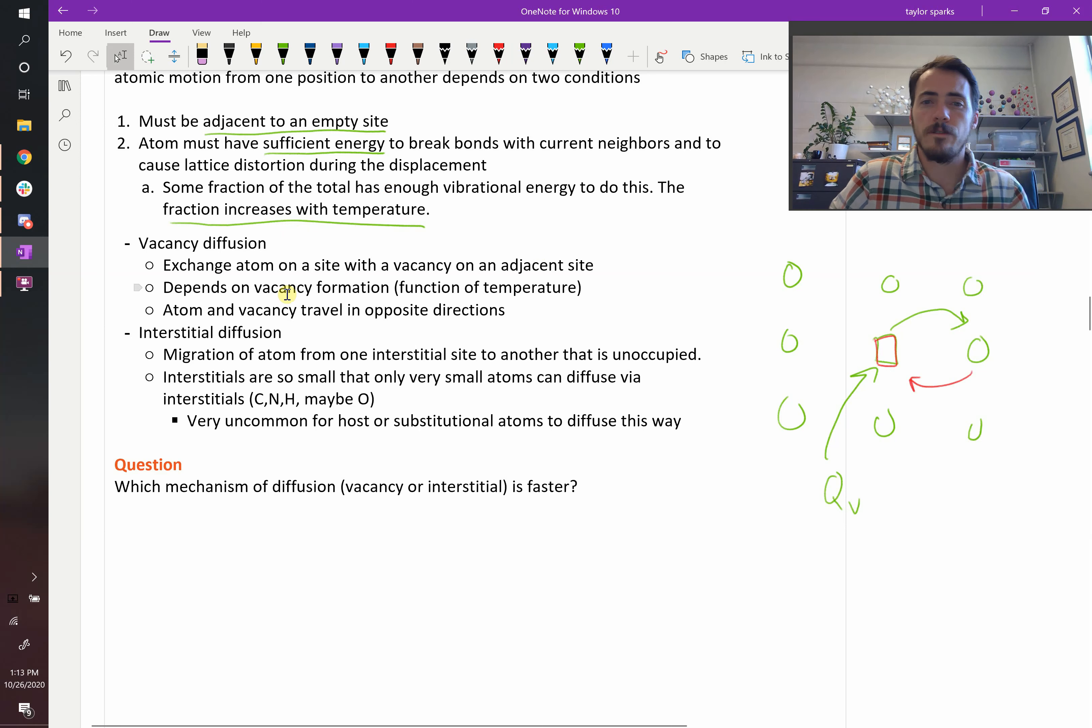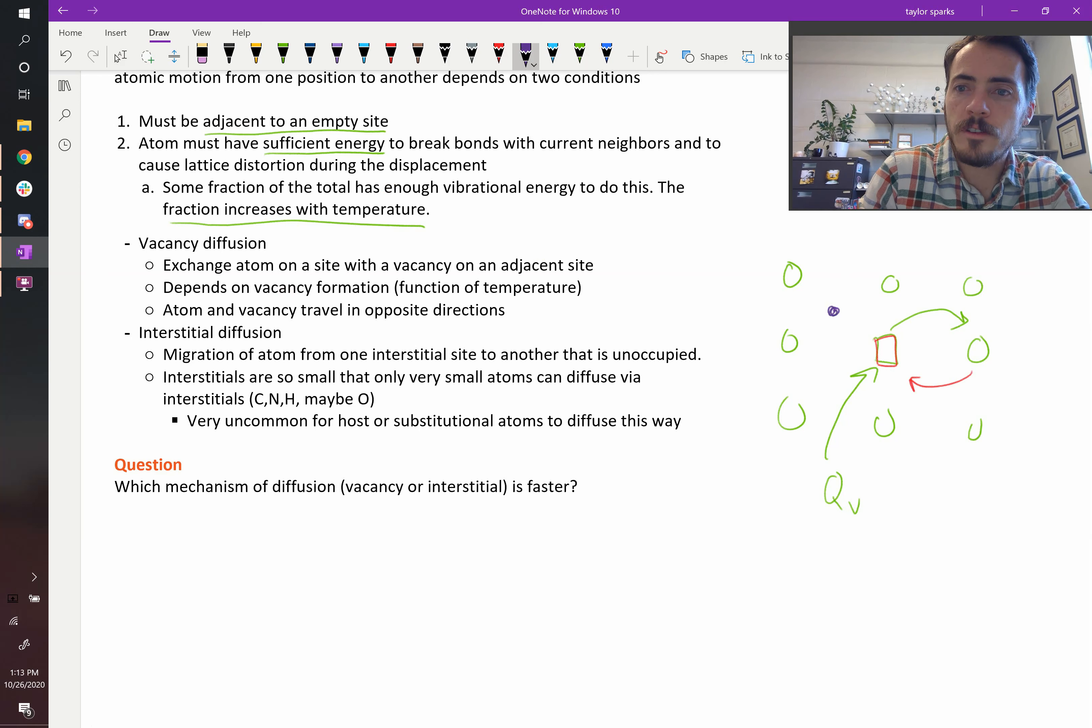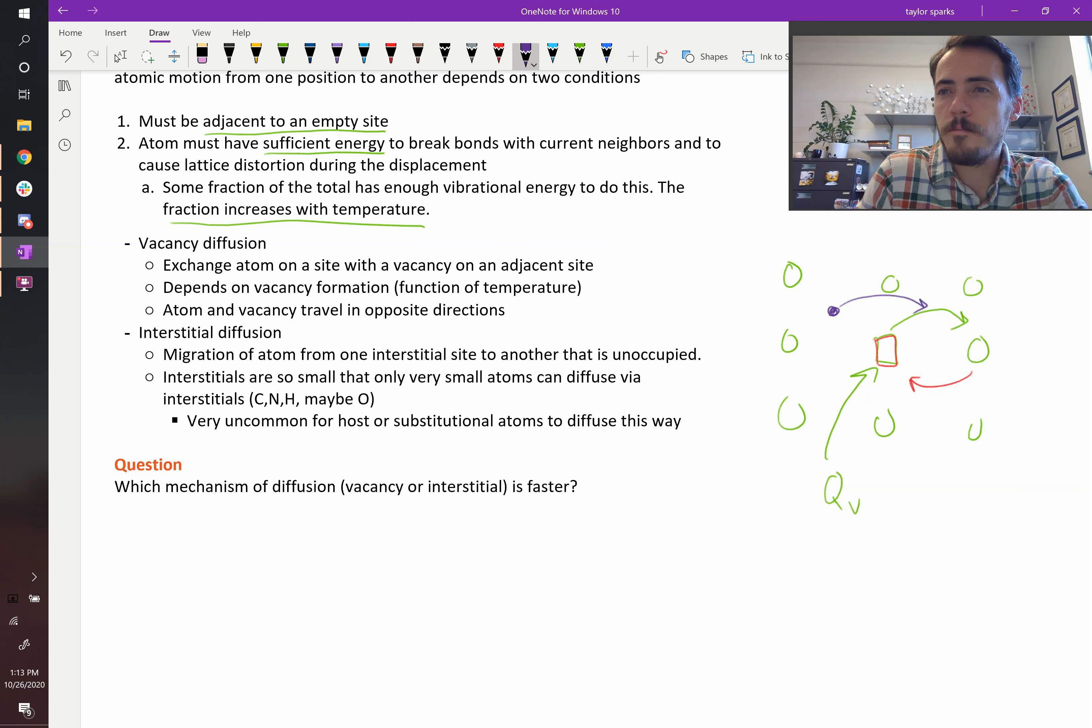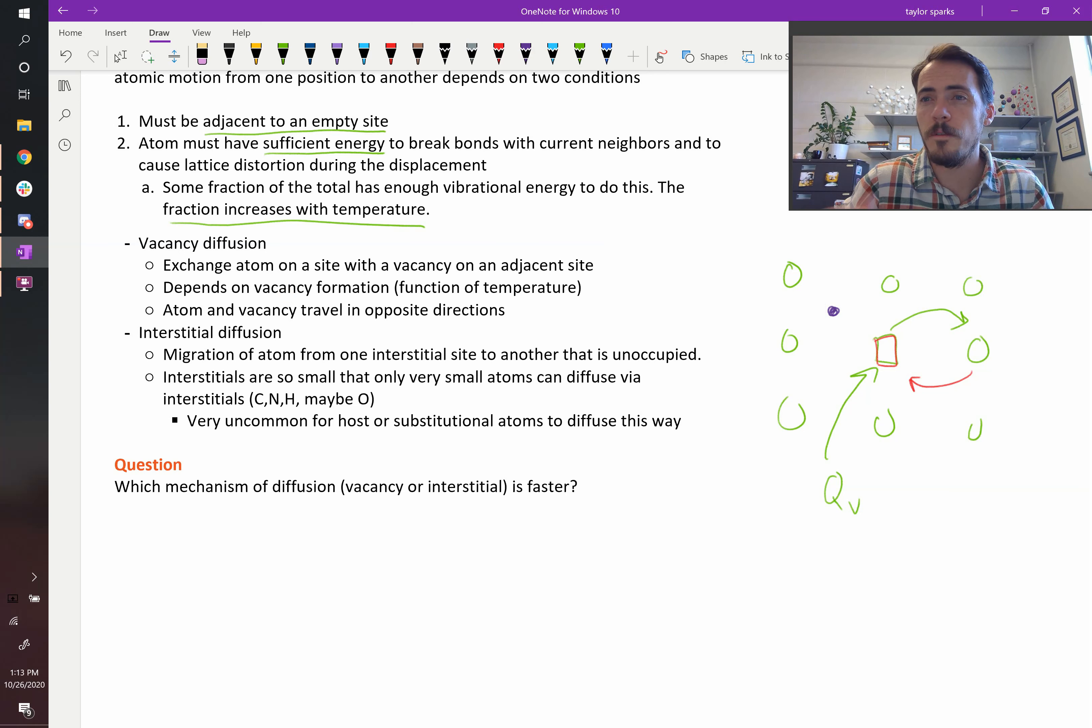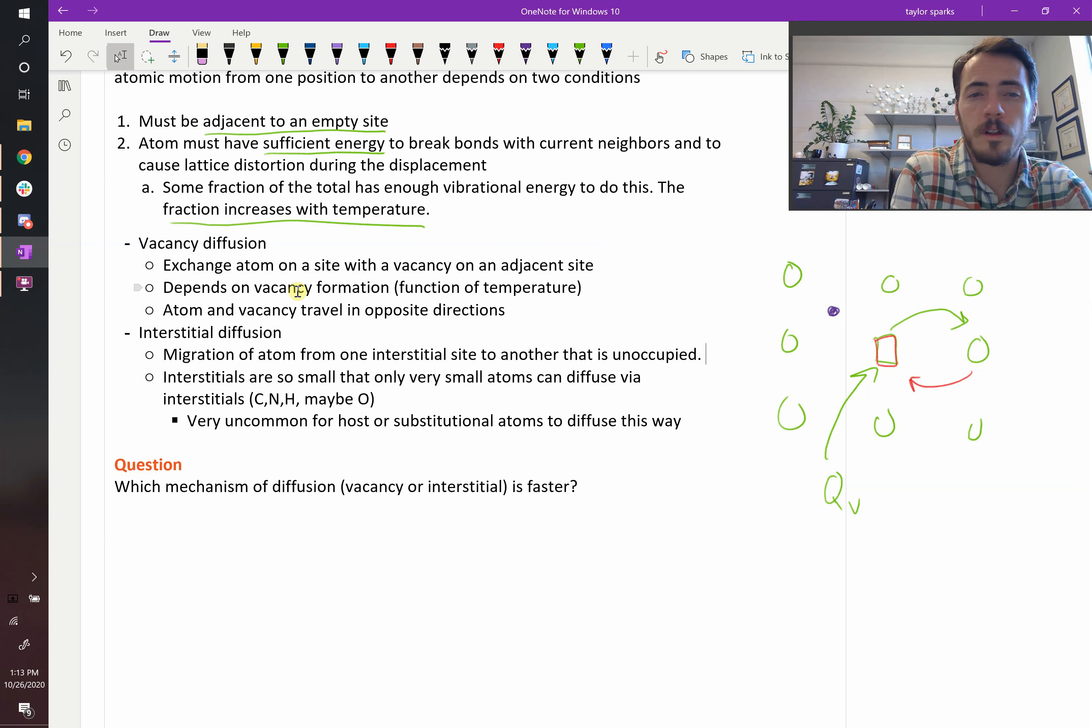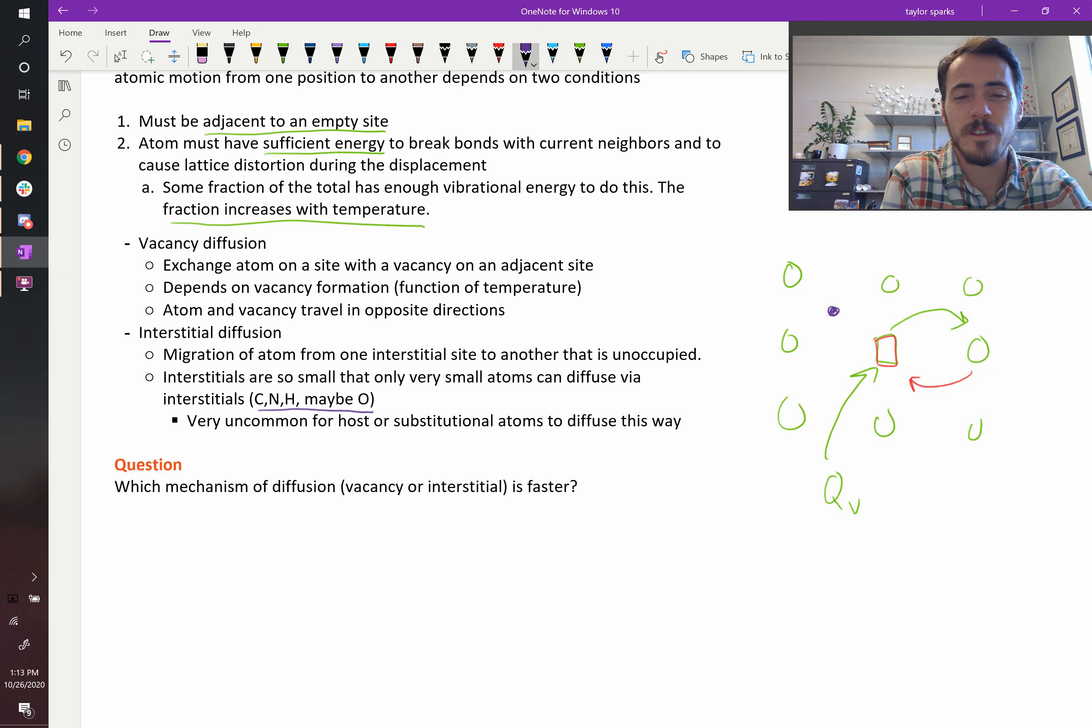It's also possible to move via interstitial diffusion. This is migration from one interstitial site to another. You might have an interstitial here, and it's able to hop there. Since these are interstitial sites, those are, by definition, already vacant. So we don't typically call them vacancies. They're understood to be vacant because they're interstitial sites. Now, because interstitial sites are typically pretty small, the only real atoms that are going to be eligible to be involved in interstitial diffusion are going to be small atoms - carbon, nitrogen, hydrogen. By the time you get to larger things like oxygen, it's less and less likely that that's going to be the mode by which they travel. It's very uncommon for host or substitutional atoms to diffuse this way because they're too large.